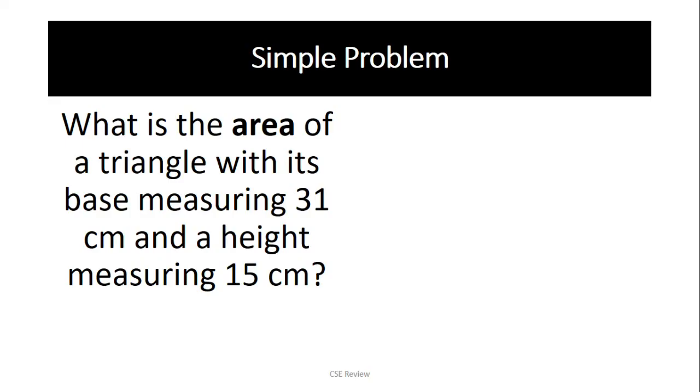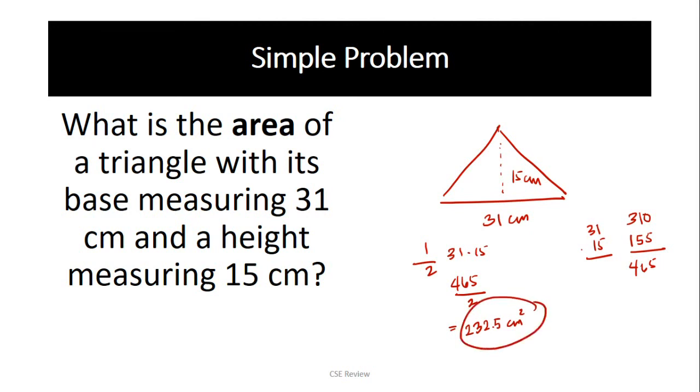Alright, let's see how you did. What is the area of the triangle with the base measuring 31 centimeters? If this is the triangle, the base is 31 centimeters. The height is 15 centimeters. What do you do? One half of 31 times 15. 31 times 15 first. It can be 310 plus half of this which is 155. So you have 465. 465 over 2 or 232.5 centimeters squared. That is your answer.